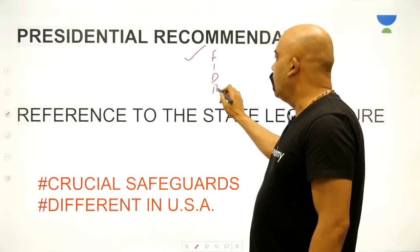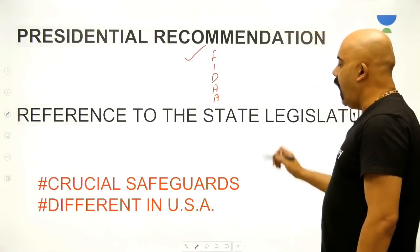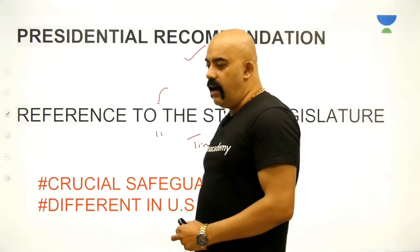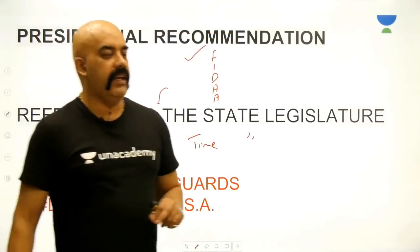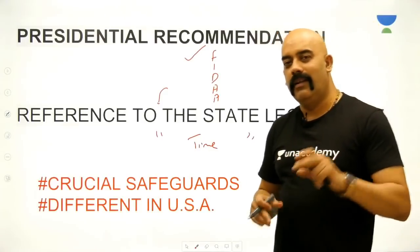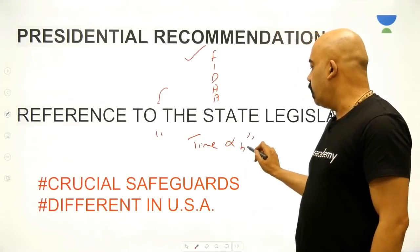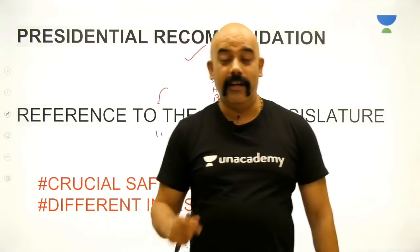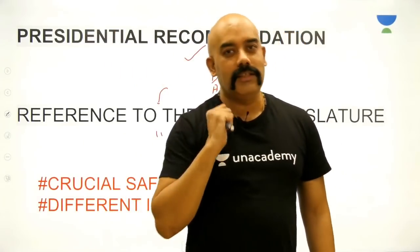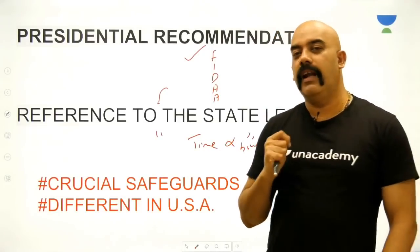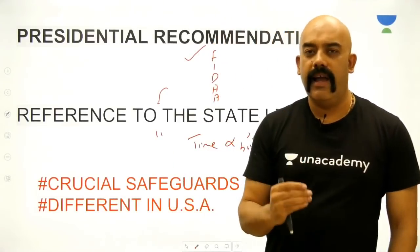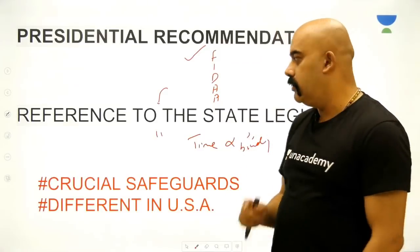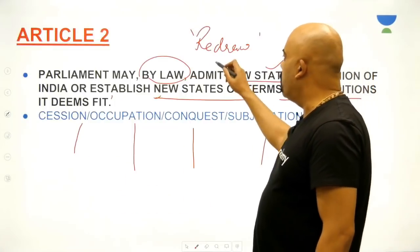However, there are safeguards in Article 3. A presidential recommendation is required, and there is also a requirement to refer the bill to the state legislature within a specific time period. This is time-bound. But even if the state legislature replies in disagreement or does not reply at all, it is not binding on Parliament. This is what we mean by a quasi-federal structure with a unitary tilt — Parliament gives the state a chance to respond, but the final decision rests with Parliament.